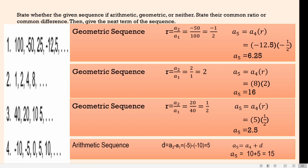For the first one, we have 100, negative 50, 25, negative 12.5. This is a geometric sequence since the common ratio is negative 50 over 100, which is negative 1.5. So to get the next term, we're going to multiply the fourth term times the common ratio. Negative 12.5 times negative 1.5 is equivalent to 6.25. So A sub 5, which is the next term, is 6.25.